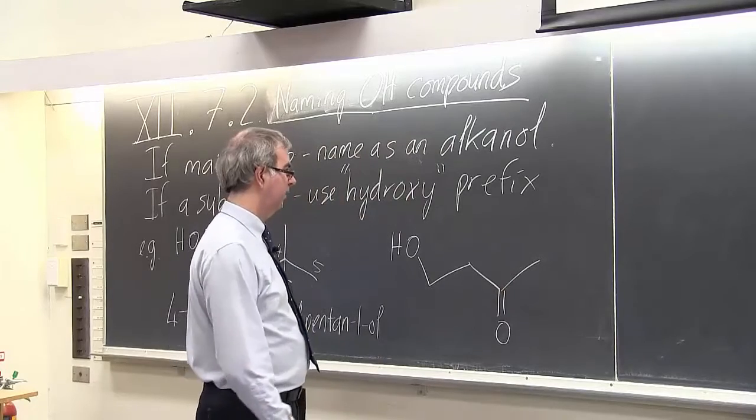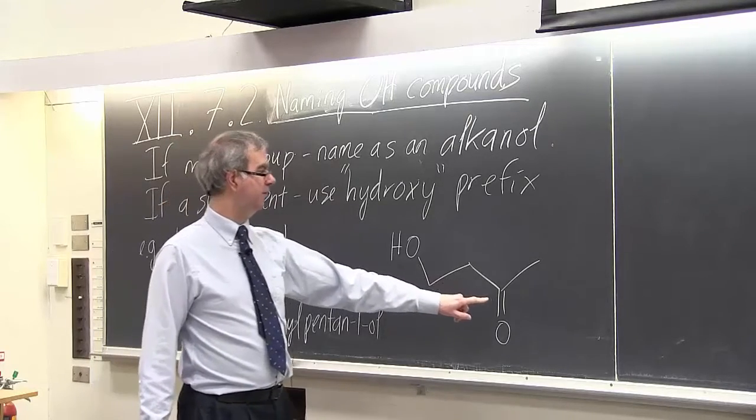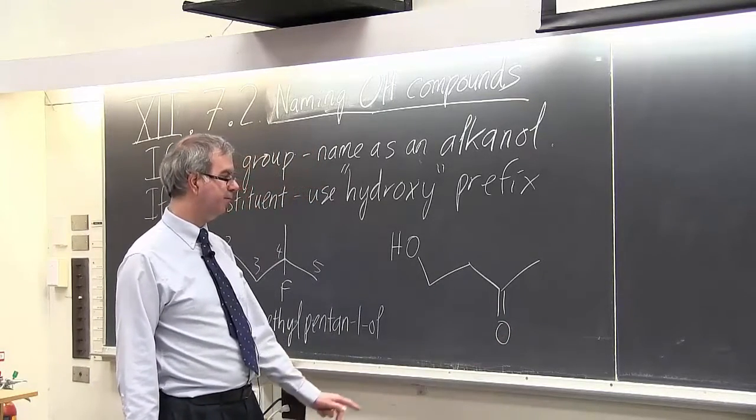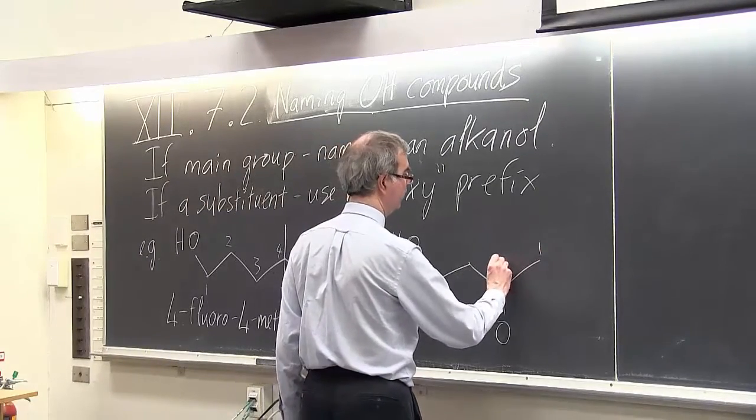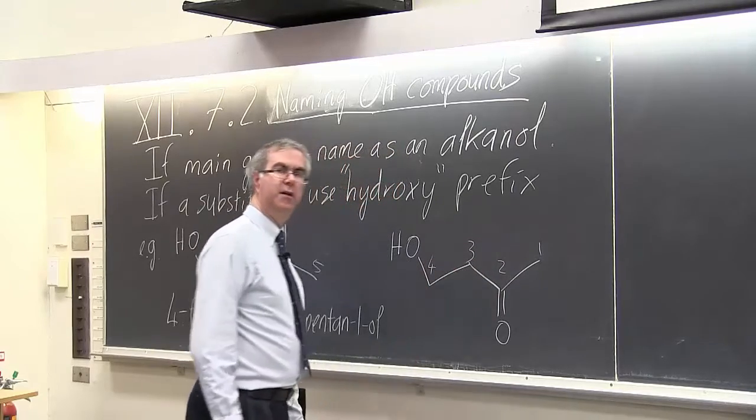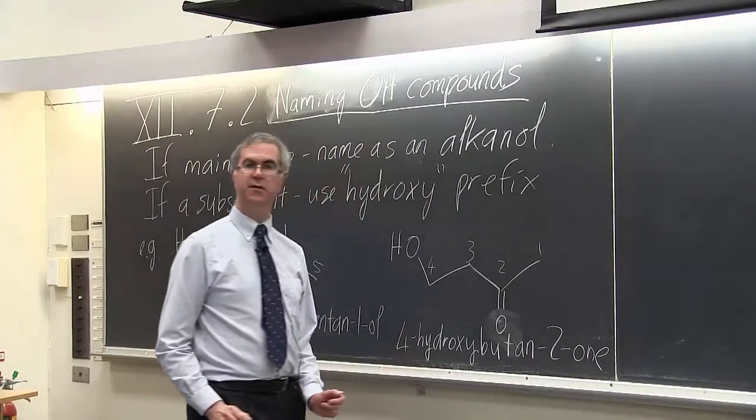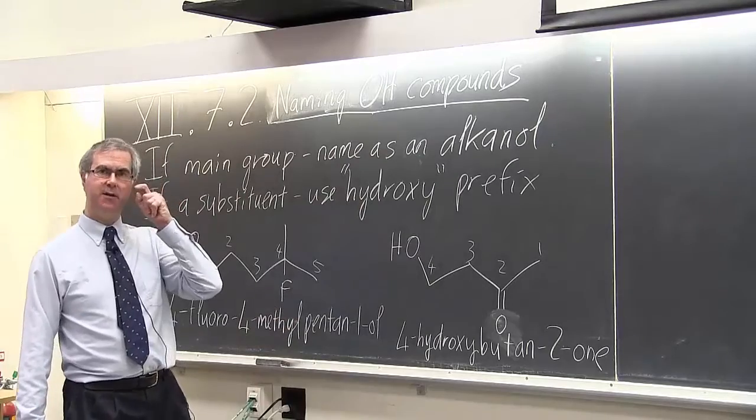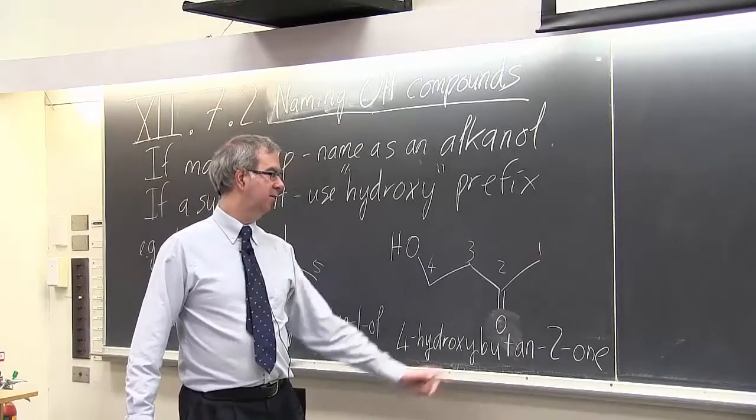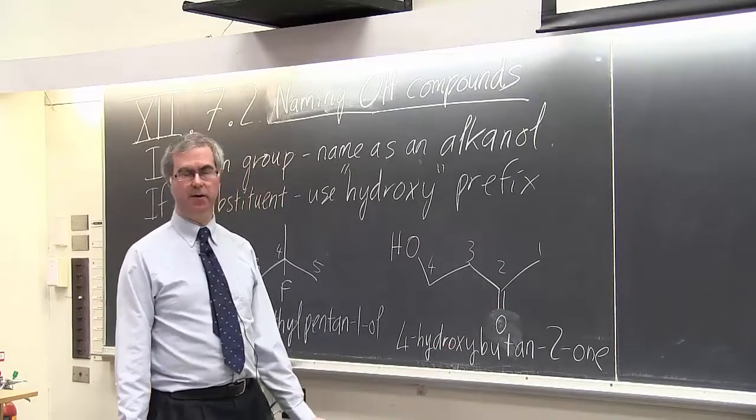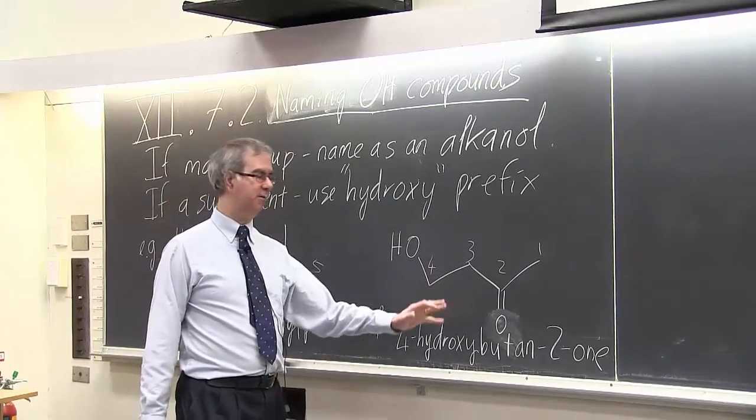This would be, now you might want to name this from this end, but if we do that, that puts the priority group at position three. And we actually want to minimize the position of the suffix. So in fact, this isn't named as a butan-3-one. It's named as a butan-2-one, so that we start numbering from the end nearer the priority group.